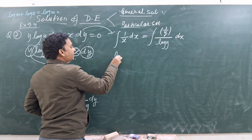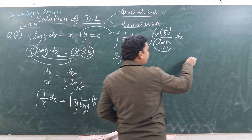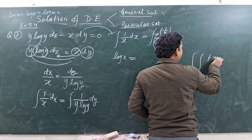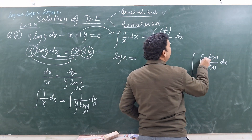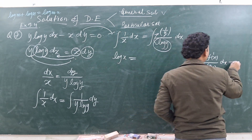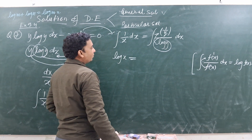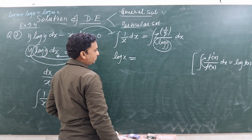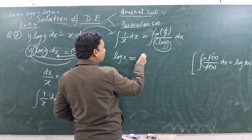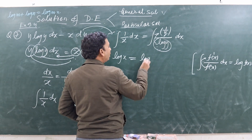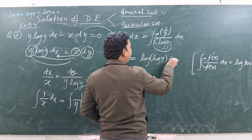Integration of 1/x gives log x. For the right side, the derivative of the denominator (log y) exists in the numerator (as 1/y), so by the direct integration formula — when the derivative of the denominator exists in the numerator, the integration is log of the denominator — we get log(log y). Since both sides are in log form, we take the constant C also in log form.